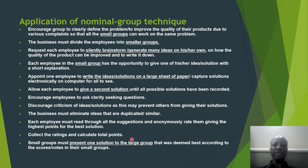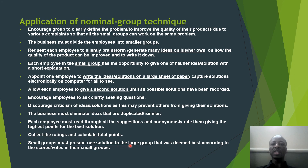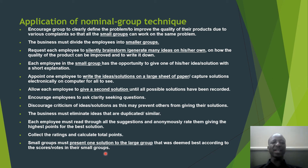Collect the ratings and calculate the total points to determine which idea is best. Then lastly, small groups must present one solution — the one deemed best according to the score of votes in their small group — to the large group. We vote for the best, and when we have the best idea in our small group we take that idea and present it to the large group.